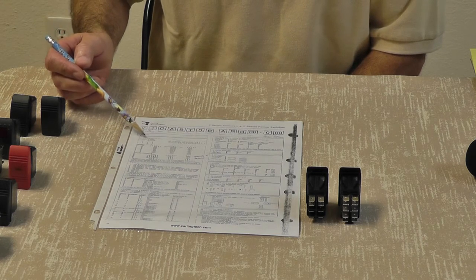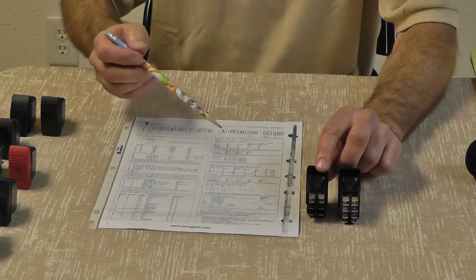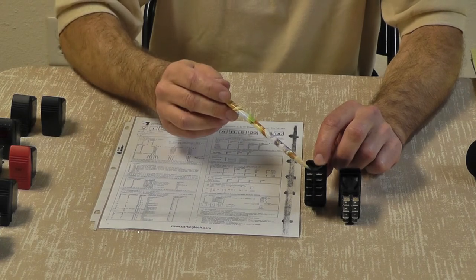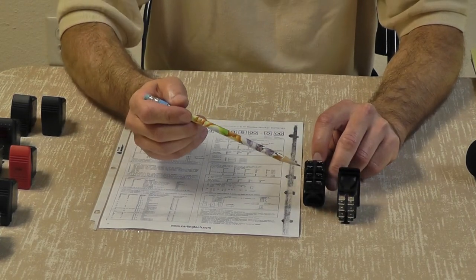This section starts out with a small diagram of the terminal locations. You'll see here, this is an eight terminal switch and a ten terminal switch. And again, this is the way they count them.